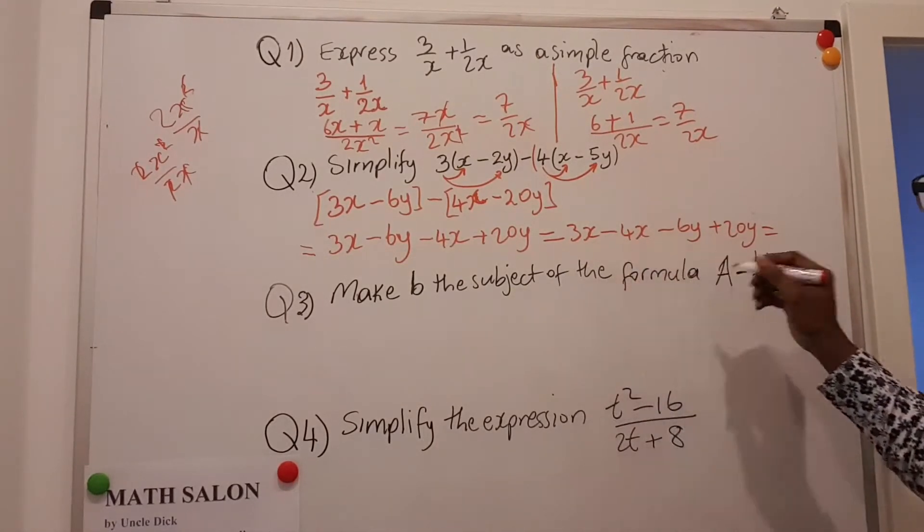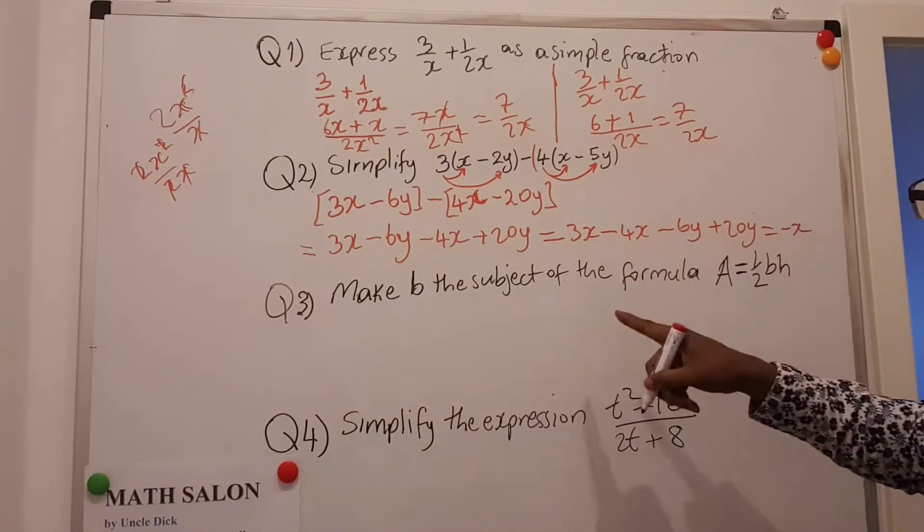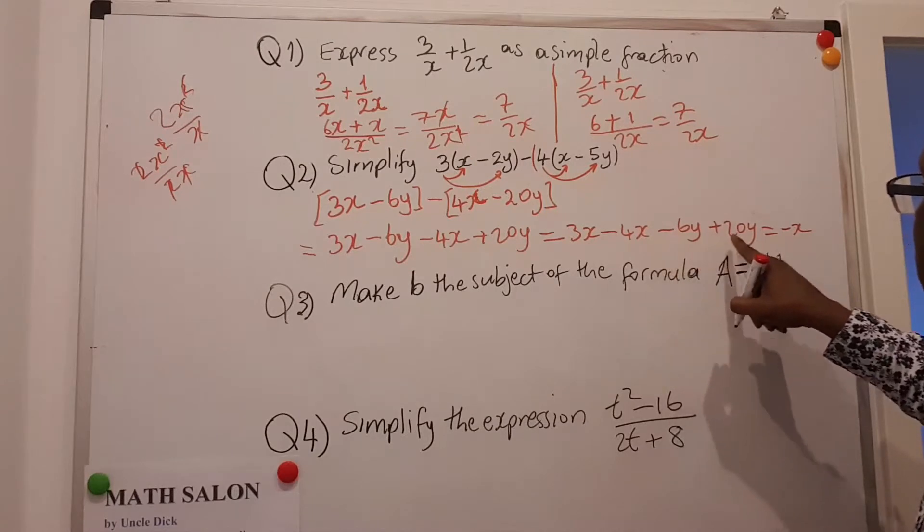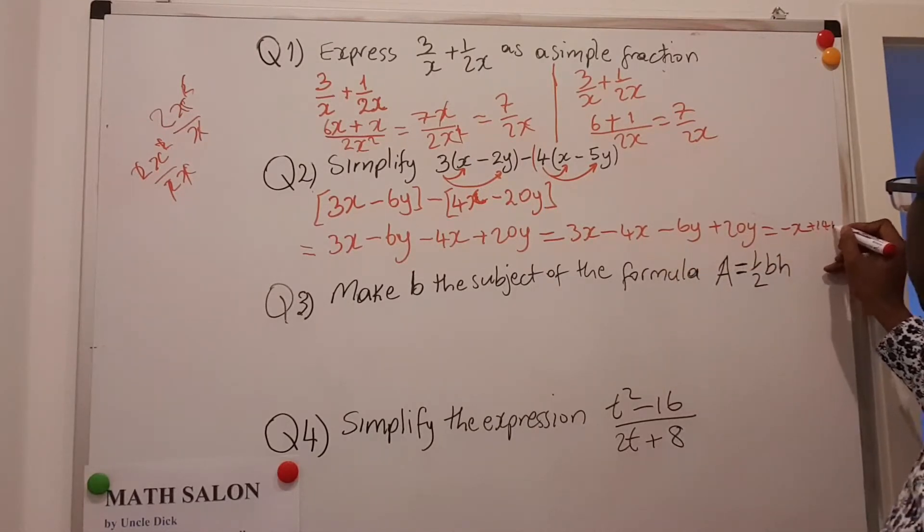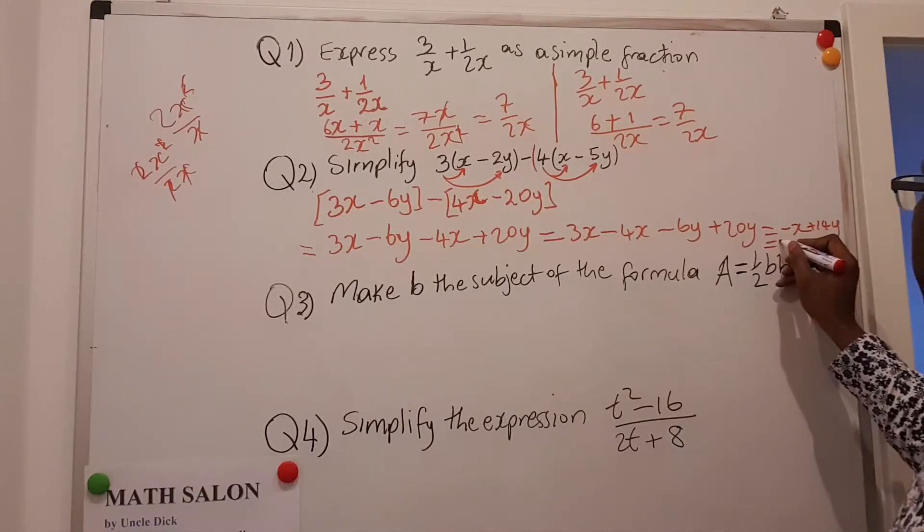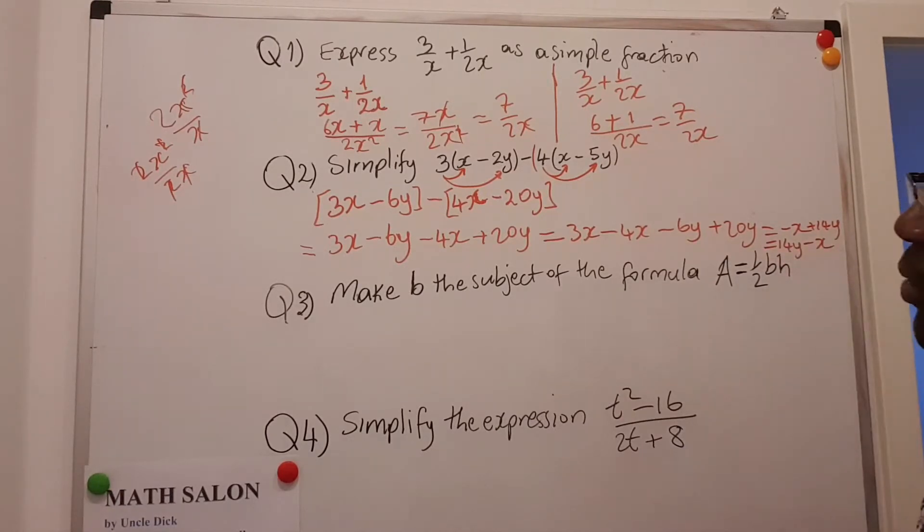3x minus 4x is minus x. Minus 6y plus 20y is 14y. To write it neatly, write it that way.